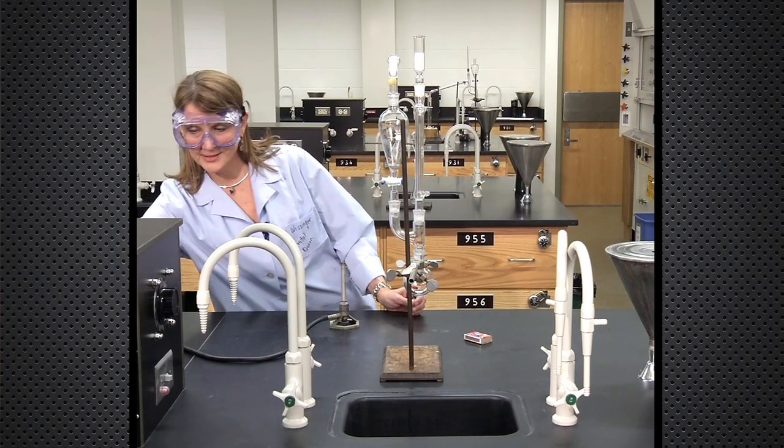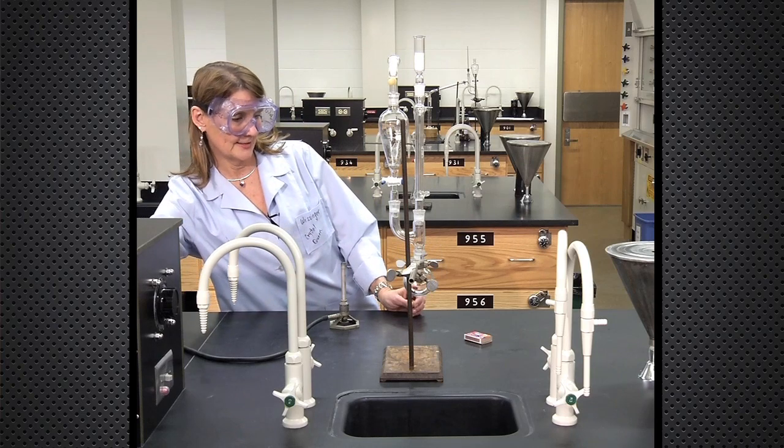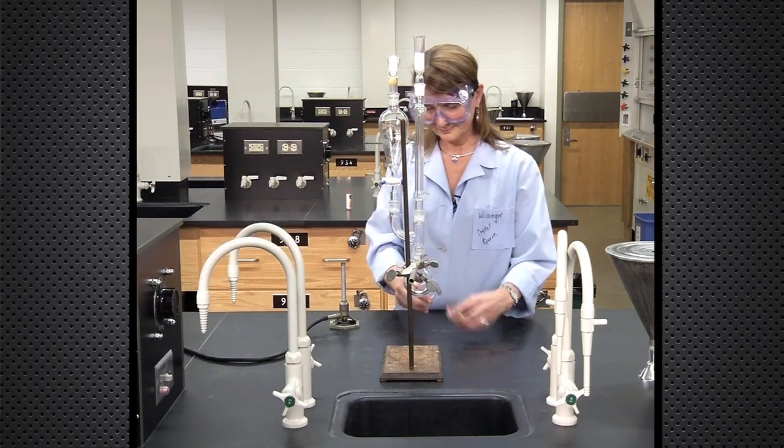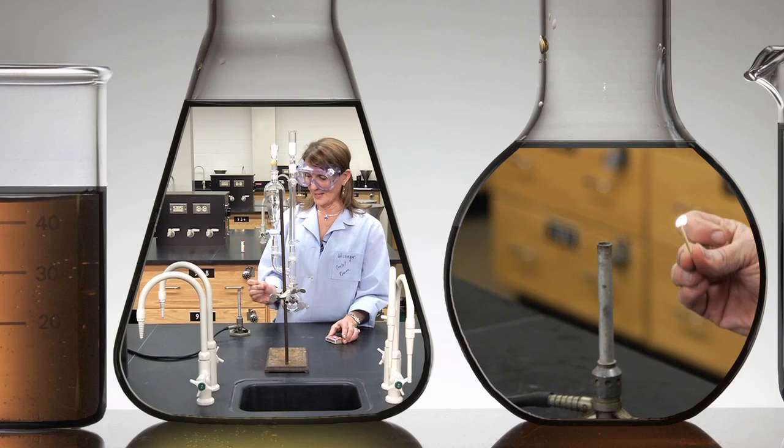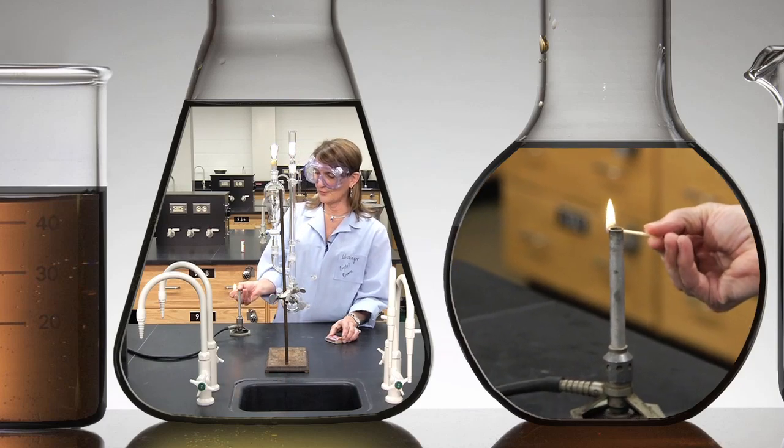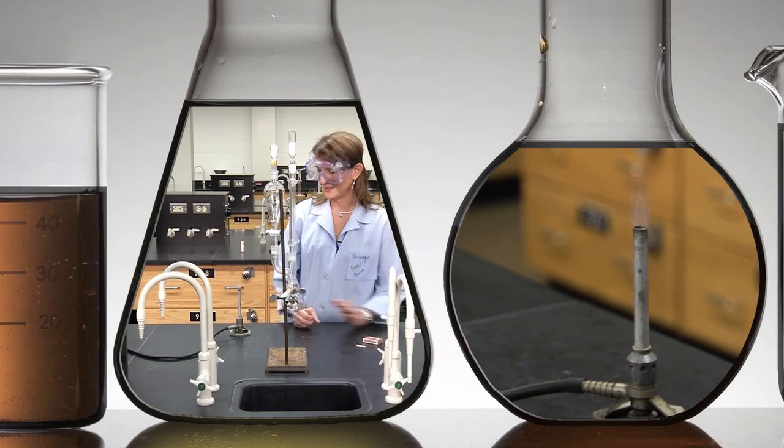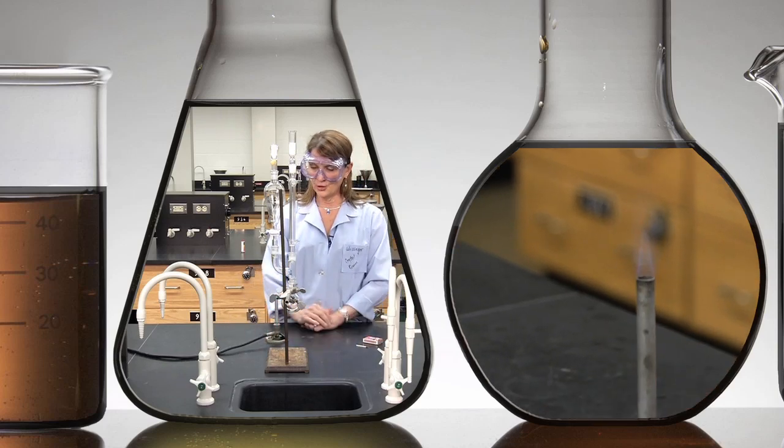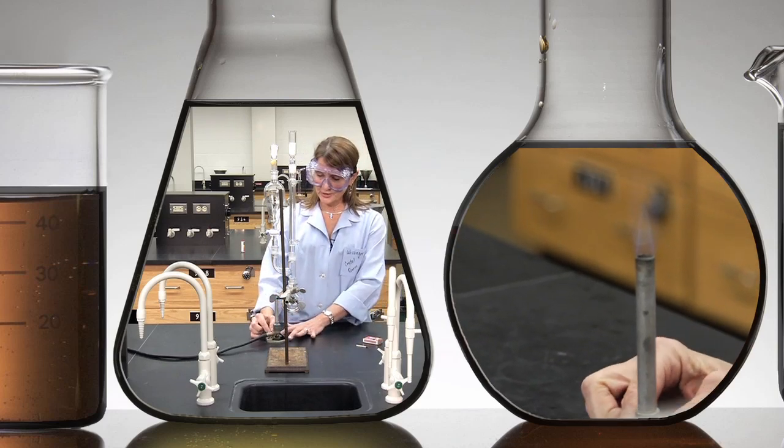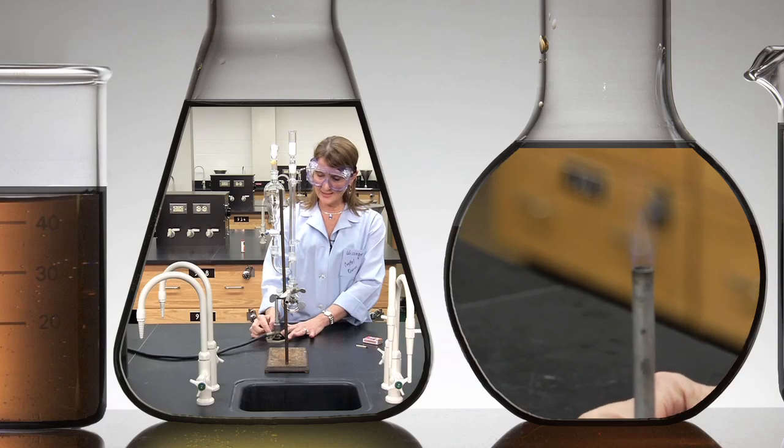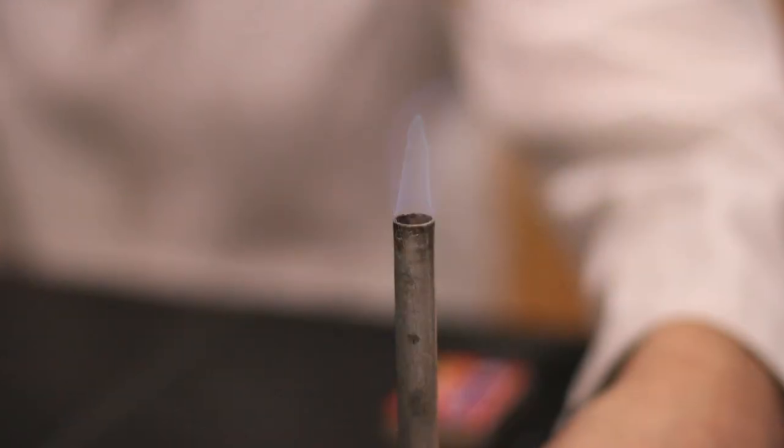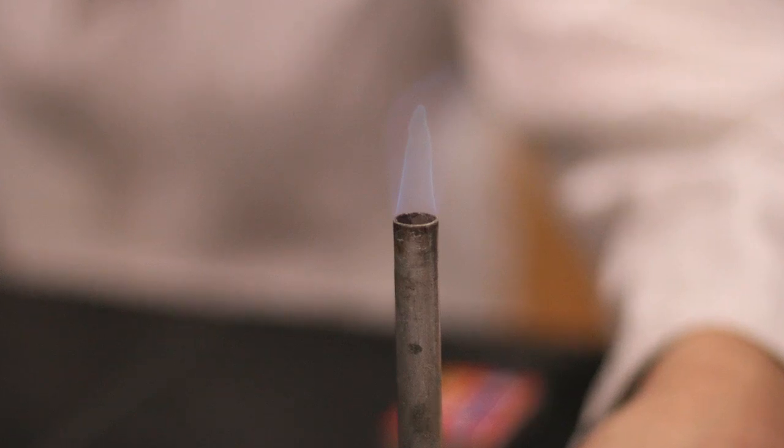To light the Bunsen burner, turn on the gas, light a match, and you always bring it in through the side to get a good flame. You want to adjust both the air and the gas so that we have a hot blue cone that's visible.